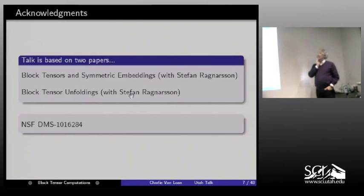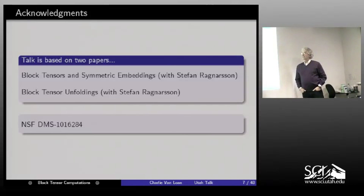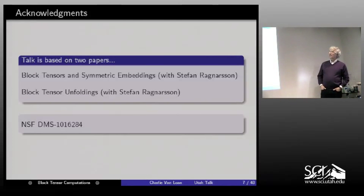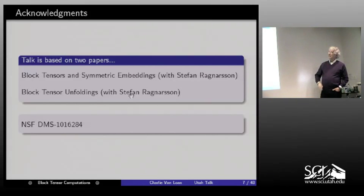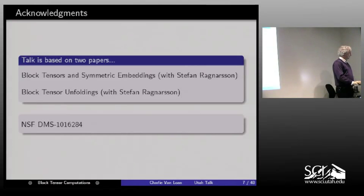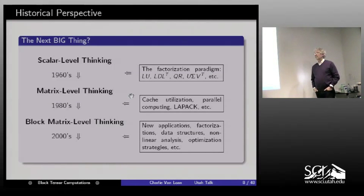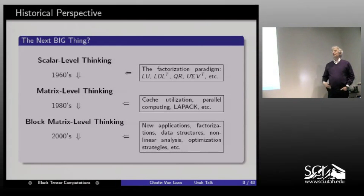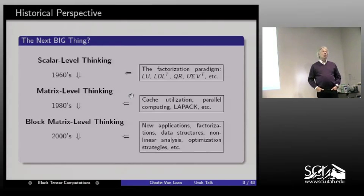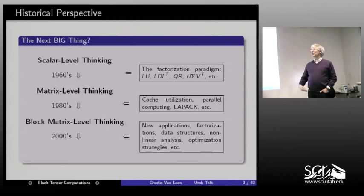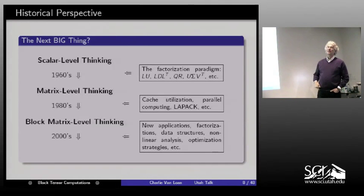Before I get going, let me say that most of what I discuss is in two recent papers with my graduate student Stefan Ragnarsson, supported by NSF. Here is the perspective for my talk: in my lifetime I've seen a sequence of events. As a graduate student it was matrix factorization as the paradigm — very much algorithms were presented at the I-J level, scalar-level thinking.